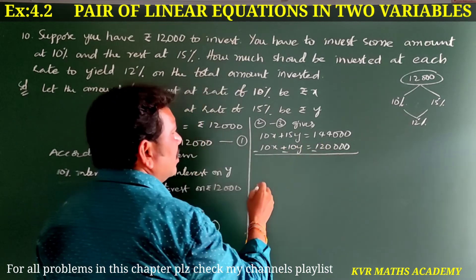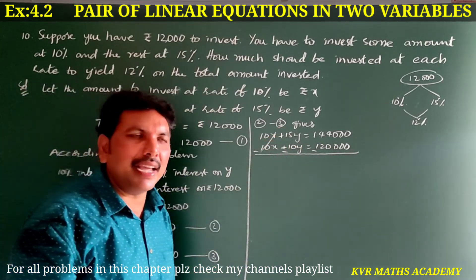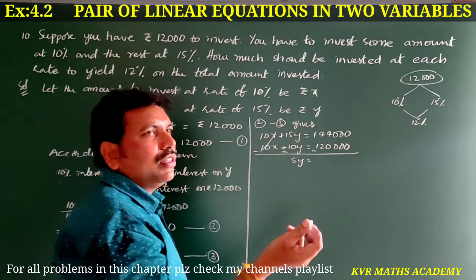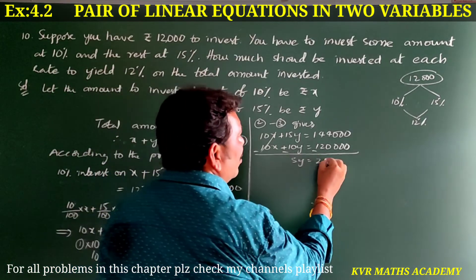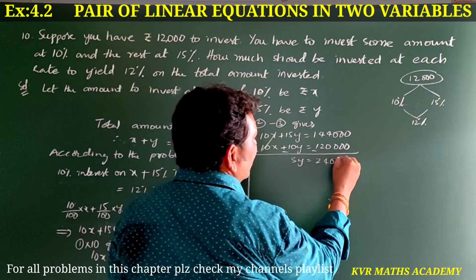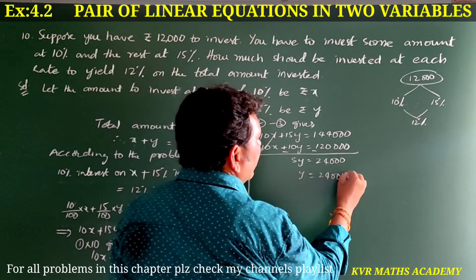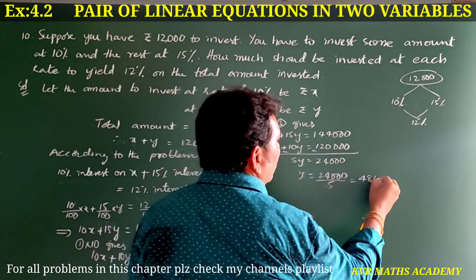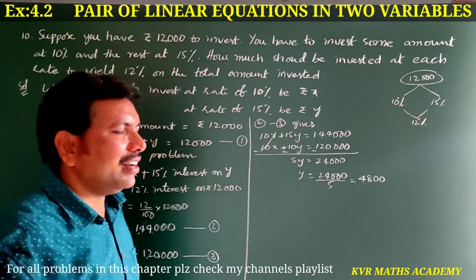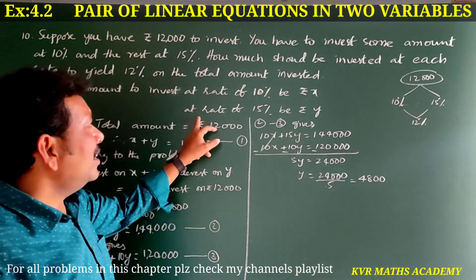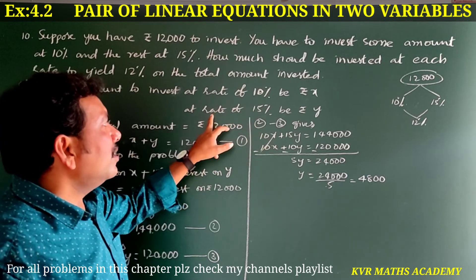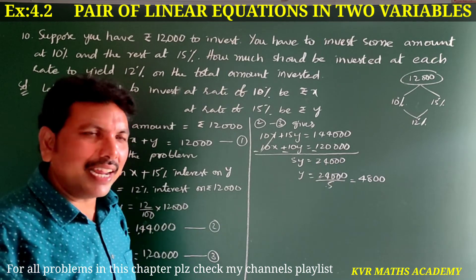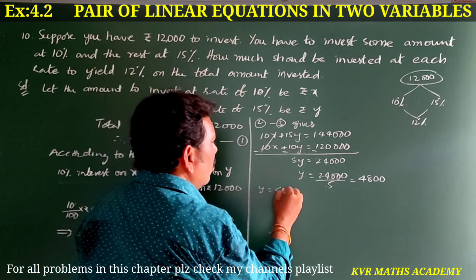Subtracting: 10X minus 10X cancels. 15Y minus 10Y gives 5Y is equal to 144,000 minus 120,000, which is 24,000. Therefore Y is equal to 24,000 divided by 5, which gives Y equals 4,800. The amount invested at 15% is rupees 4,800.